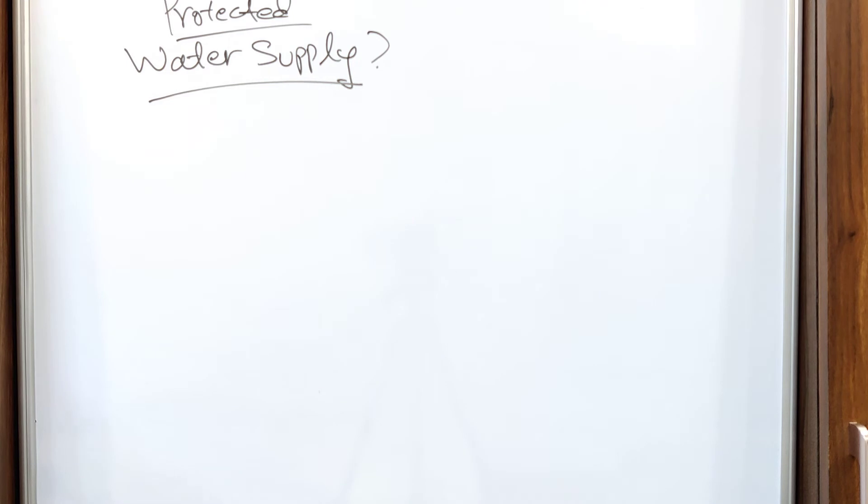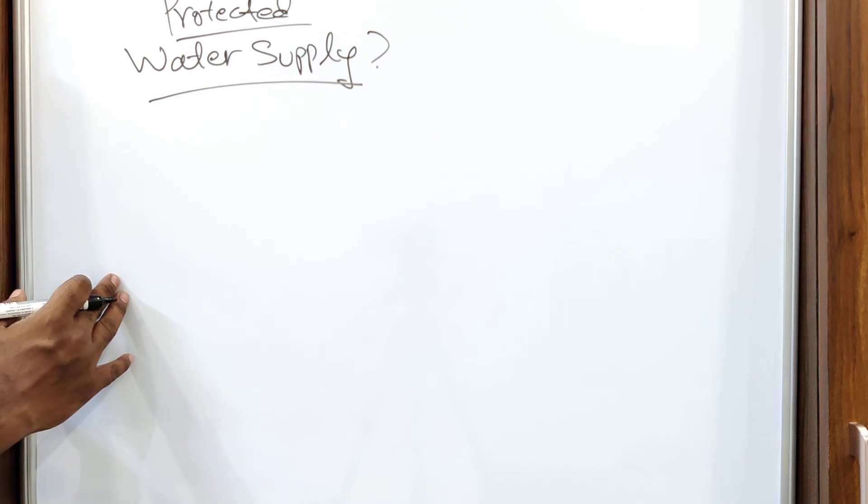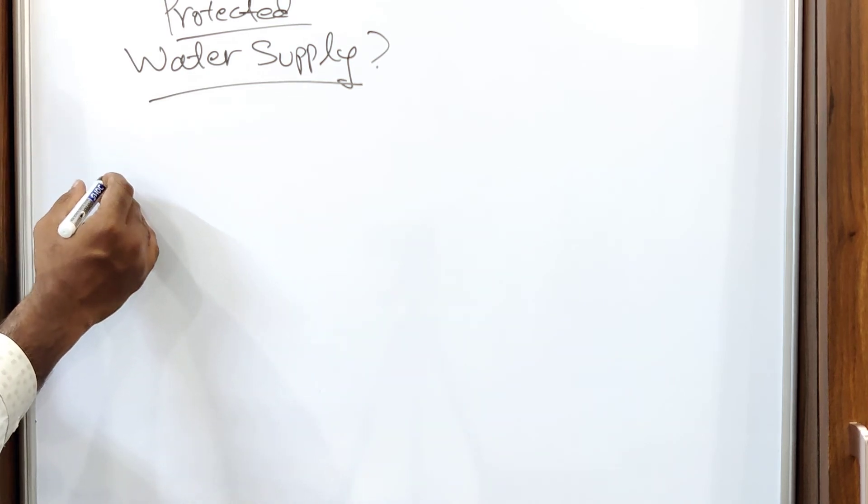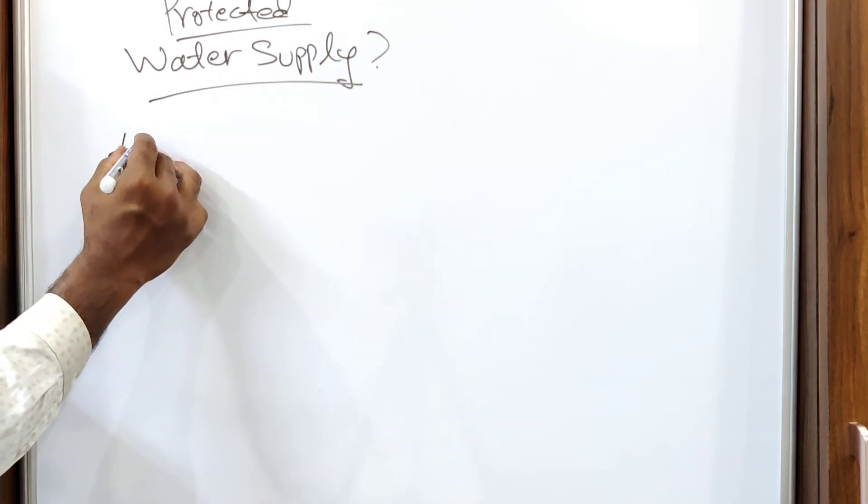So what are the objectives of community water supply? Community water supply is nothing but the protected water supply to a community. What are the objectives of it? The first thing is to provide the wholesome water for drinking purpose. As we know we discussed water is required for drinking,